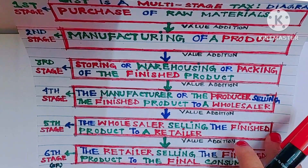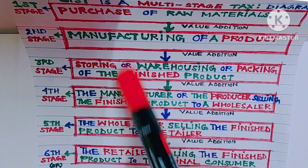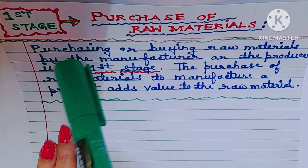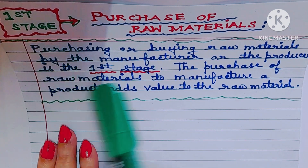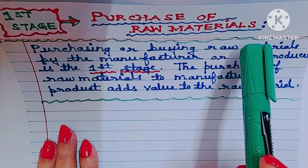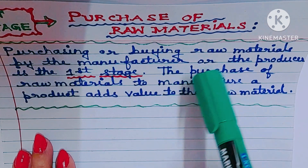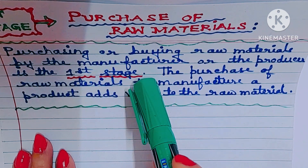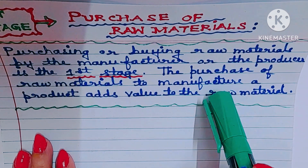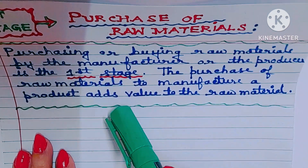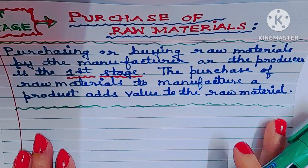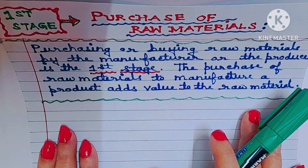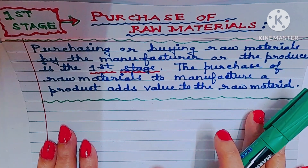Now let me explain in detail what is the first stage — that is purchase of raw materials. Purchasing or buying raw materials by the manufacturer or the producer is the first stage. The purchase of raw materials to manufacture a product adds value to the raw material.